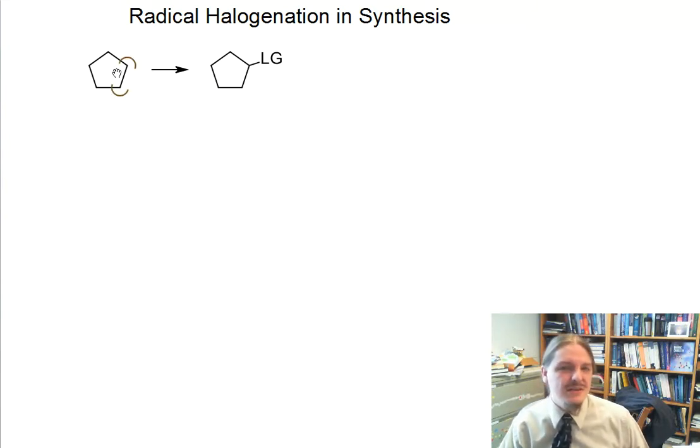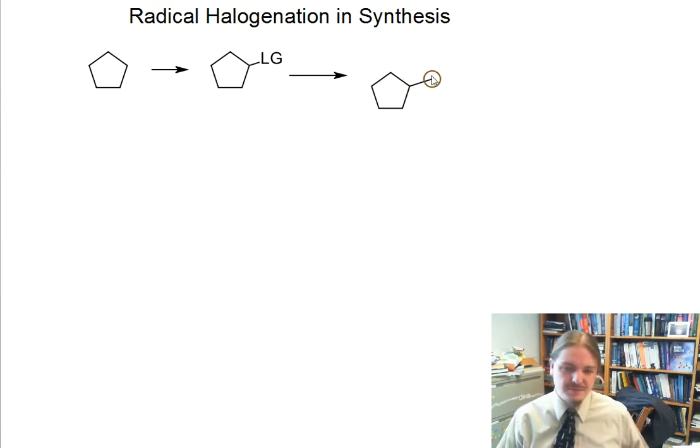I want to consider a generic case where we have cyclopentane and we want to convert cyclopentane into some molecule that has a leaving group, and maybe we want that because down the line we want to do another substitution.